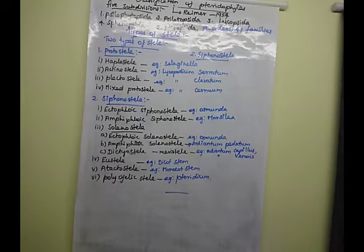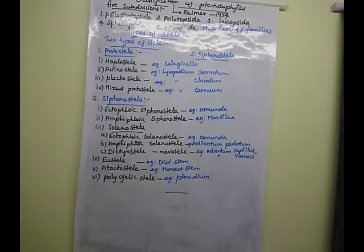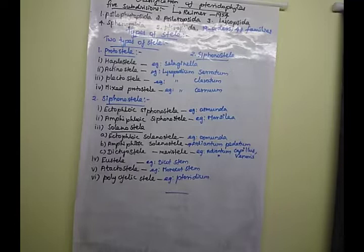The economic importance of Pteridophytes is a potential five-mark question. So all of you go through this question. Now the next topic is types of stele. What is stele? It is the central cylinder of vascular tissues - xylem and phloem - and also pericycle, and sometimes medullary pith is also present.